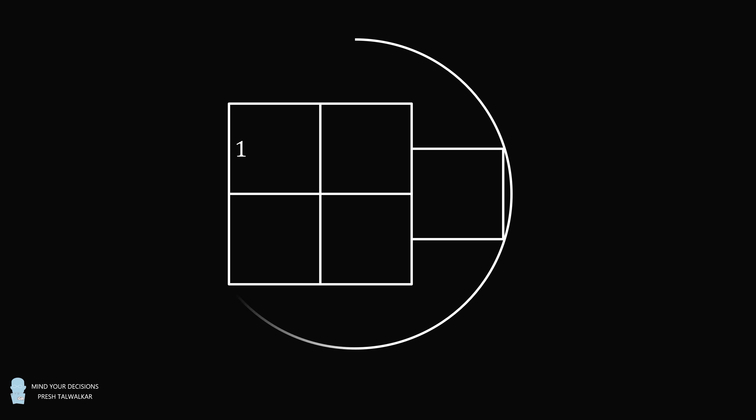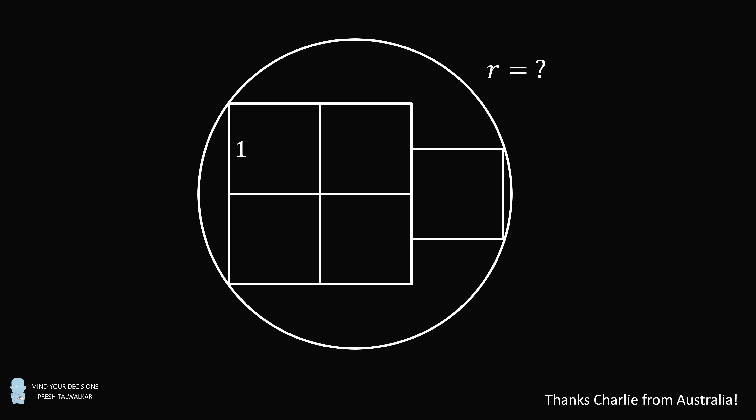Hey, this is Preshto-Walker. We have five squares in a 2x2 grid and one square in the middle of this 2x2 grid. Each square has a side length equal to 1. This arrangement of five squares is circumscribed by a circle. The question is: what is the radius of the circle? I thank Charlie from Australia for the suggestion. Pause the video if you'd like to give this problem a try, and when you're ready, keep watching to learn how to solve this problem.